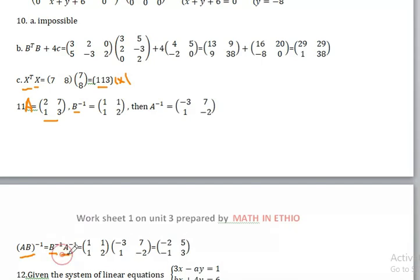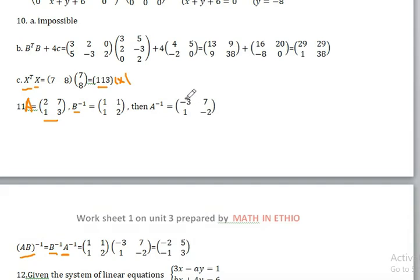In order to find A inverse, we have to find the determinant. This doesn't exist but we will change it. We fix the negative and then put negative value plus positive.